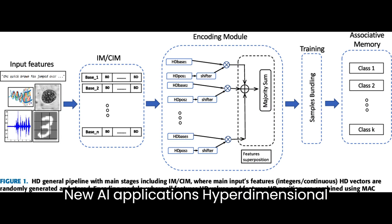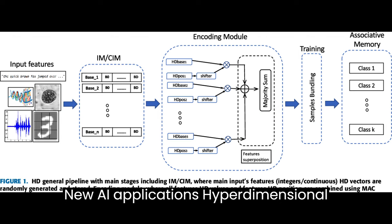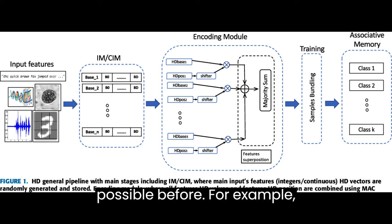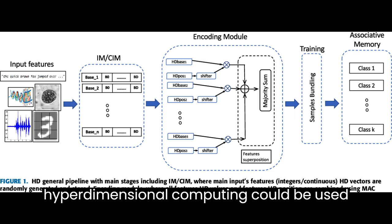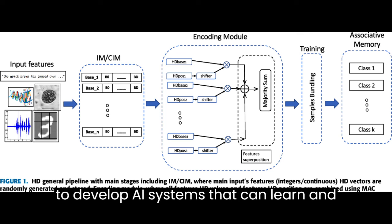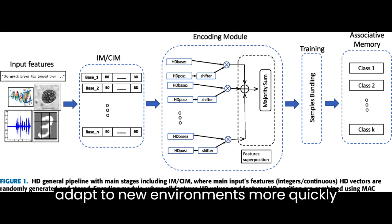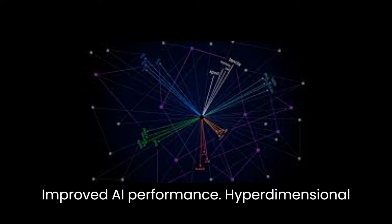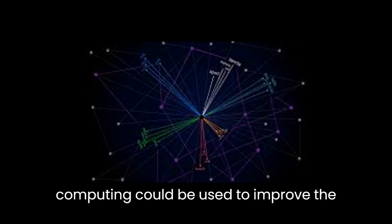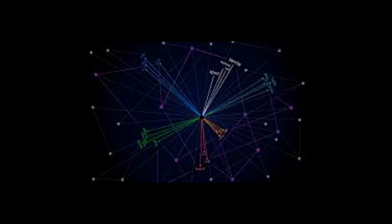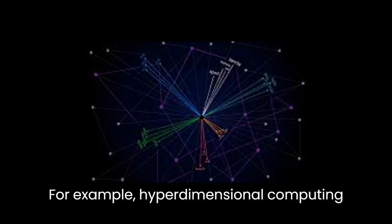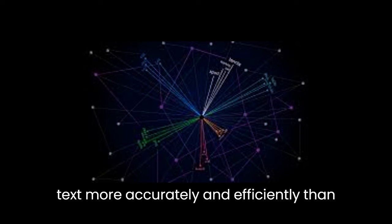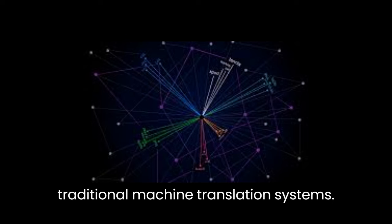Opportunities include new AI applications — hyperdimensional computing could be used to develop new types of AI applications that were not possible before, such as AI systems that can learn and adapt to new environments more quickly and easily than traditional AI systems. It could also improve AI performance; for example, it could be used to develop machine translation systems that are more accurate and efficient than traditional ones.